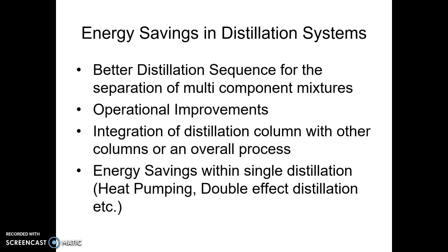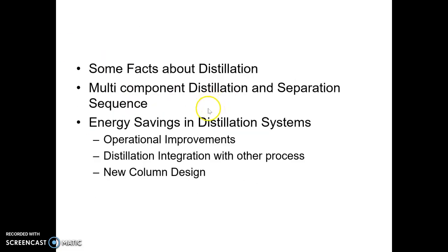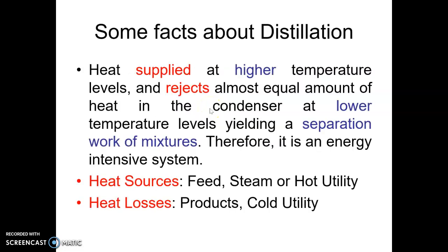There are multiple ways we can save energy in distillation systems. It is important to save energy in distillation because: we supply heat in the distillation column at a higher temperature and we reject an almost equal amount of heat at a lower temperature. This creates the separation work of a mixture. We supply energy in the reboiler at a higher temperature and remove energy at the condenser at a lower temperature, and this temperature difference creates the separation work — which makes the energy efficiency of a distillation column quite poor.